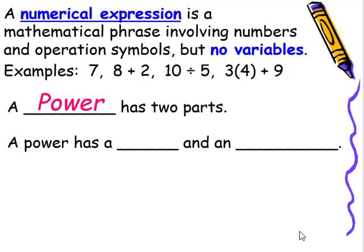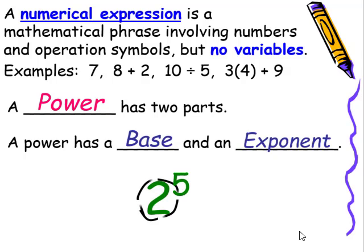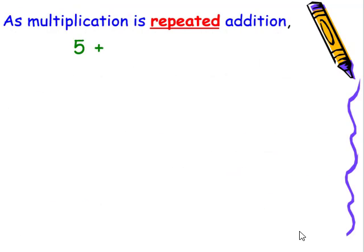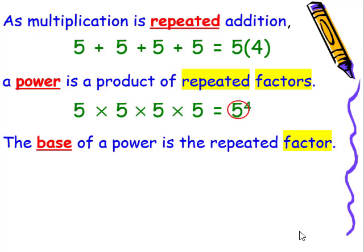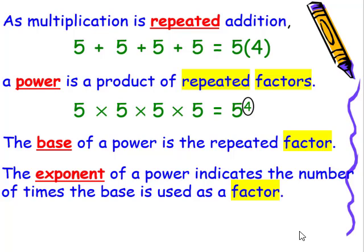A power has a base and an exponent. So when we take a look at the power, two to the fifth power, two is the base and five is the exponent. As multiplication is repeated addition, a power is a product of repeated factors. The base of the power is the repeated factor. The exponent of the power indicates the number of times the base is used as a factor.